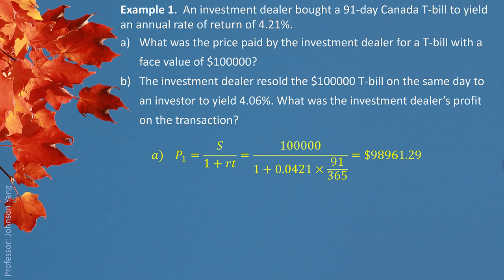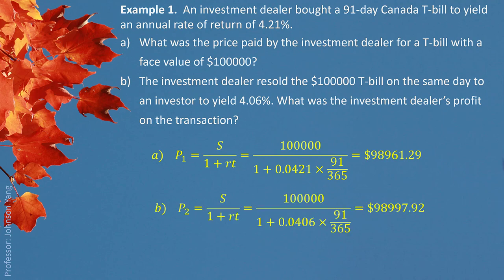On the same day, an investor holding the Treasury Bill sells it to another investor — they will yield different interest rates. Using the same present value formula but with a different interest rate, the price comes out to $98,997.92. The original investor made a profit — the difference between purchase and sale price is $36.63.